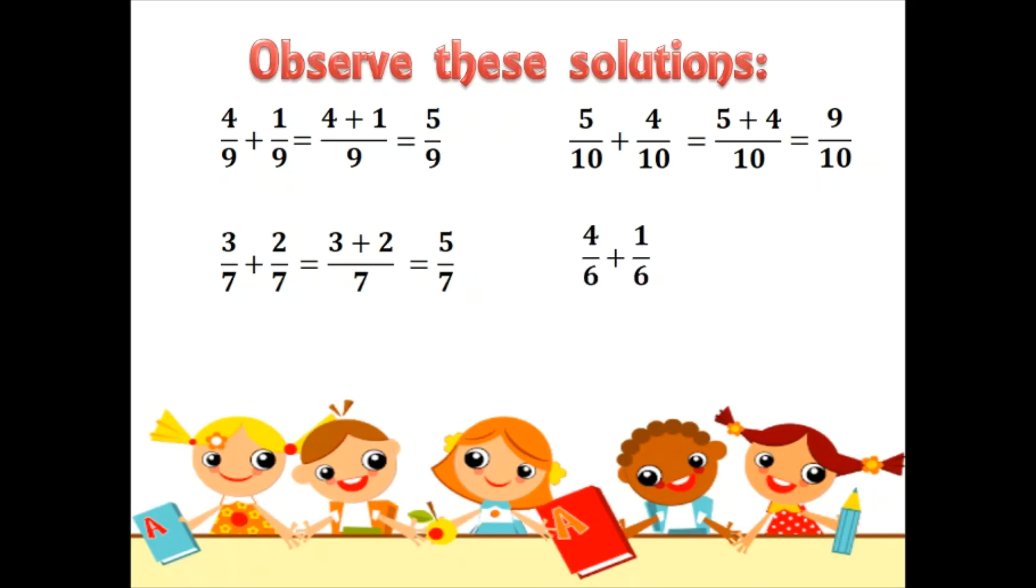Now, 4 by 6 plus 1 by 6. The denominator is same, 6. We will write that as it is and add the numerators, 4 plus 1, and the answer will be 5 by 6.